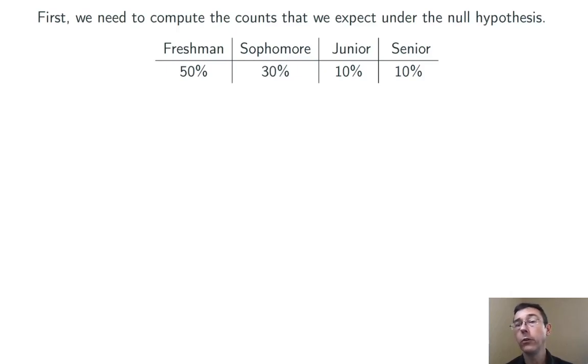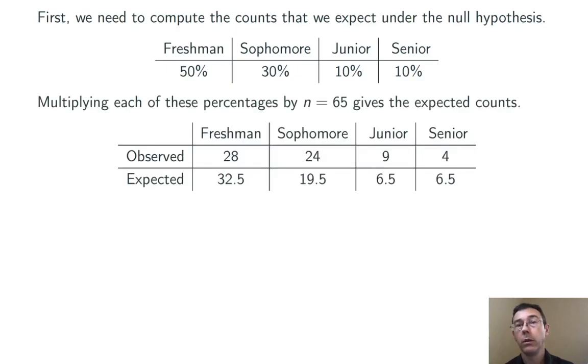So, the first thing we need to do in order to run this significance test, in order to compute chi-squared, is to compute the counts that we would expect under the null hypothesis that the population of all students in stats classes at this college has this breakdown.